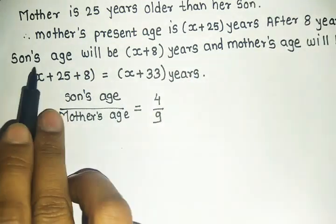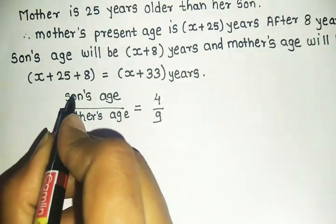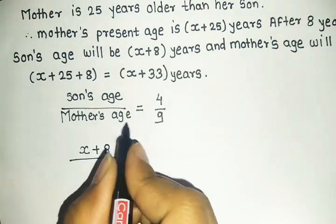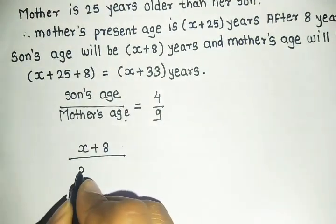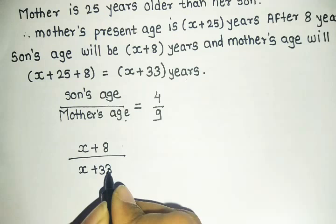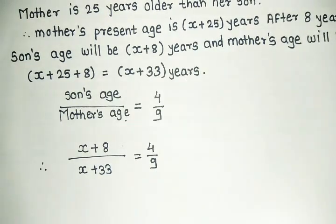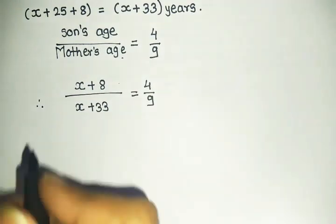Now son's age after 8 years, we found to be x plus 8. So son's age is x plus 8 divided by mother's age. Mother's age is x plus 33, equals 4 upon 9.